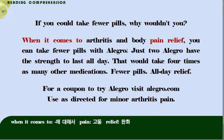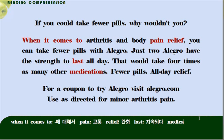단지 두 알의 Allegro가 하루 종일 last — '마지막'이라는 뜻도 있습니다만, 동사로서 '지속되다'라고 하는 뜻이 있죠. 단지 두 알의 Allegro가 하루 종일 지속될 수 있는 힘을 가지고 있습니다. 즉, 약효를 지니고 있습니다. 'That would take four times as many other medications.' 'Medication' — 약이라고 하는 뜻입니다. 바로 그것, 그와 같은 약효는 많은 다른 약 4배를 요할 겁니다. 'Fewer pills, all day relief.' 보다 더 적은 알약을 드십시오. 그리고 하루 종일 통증을 완화시키십시오.